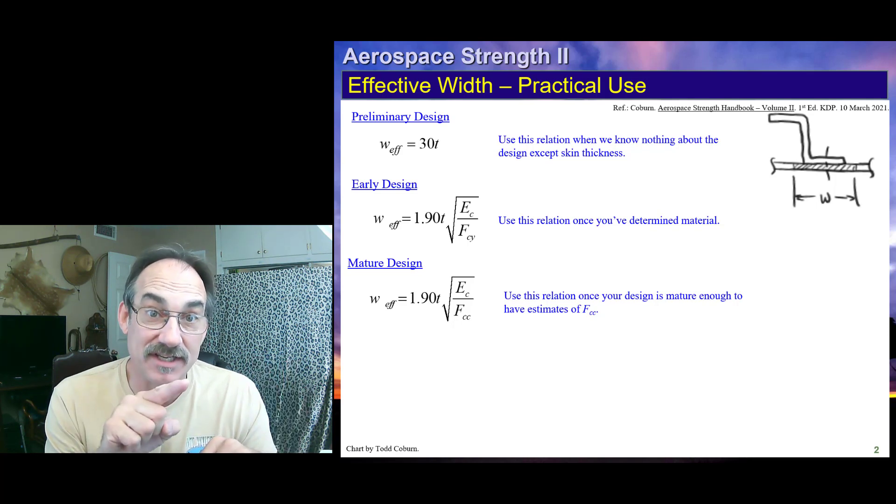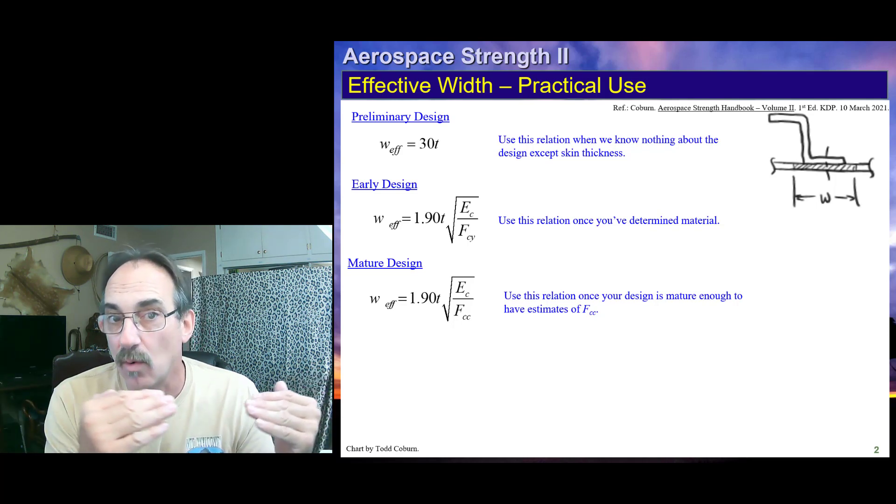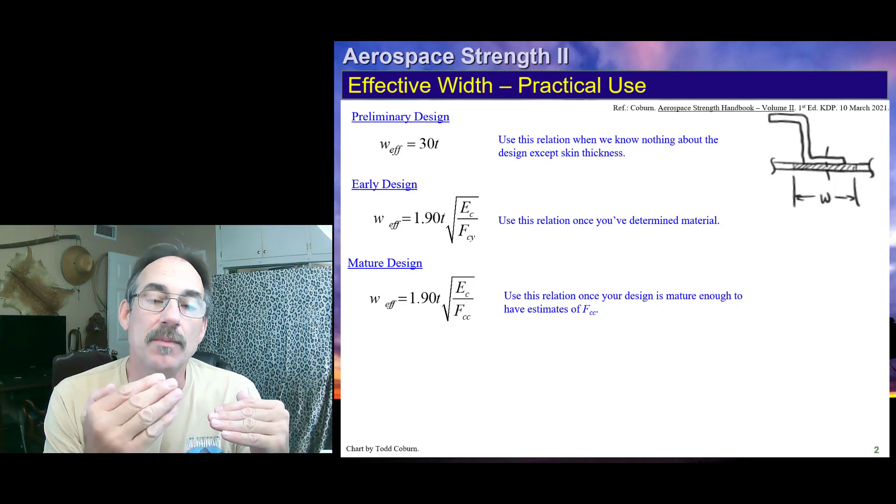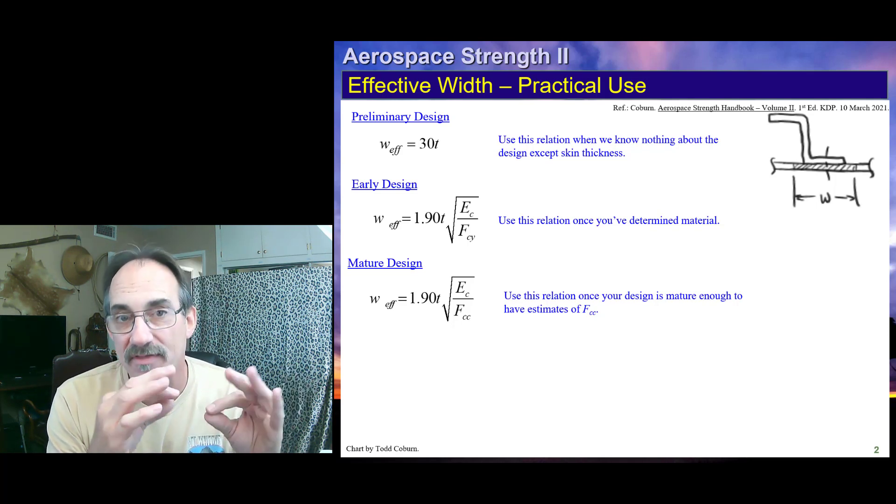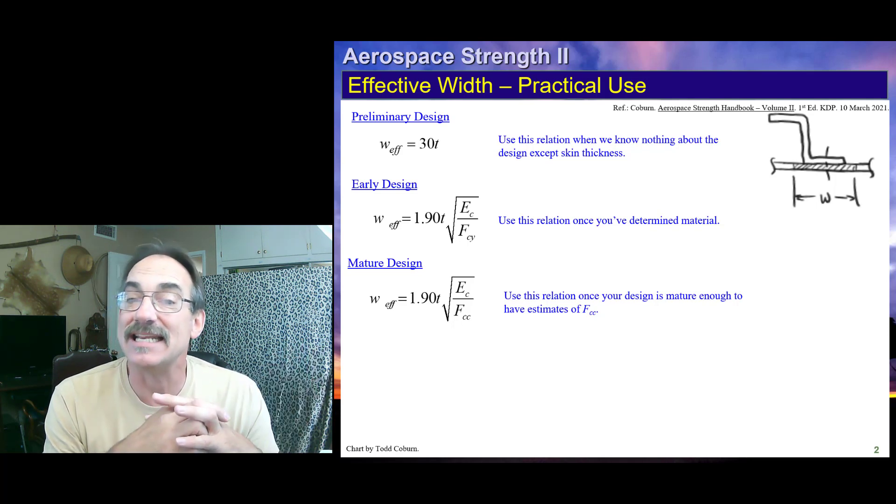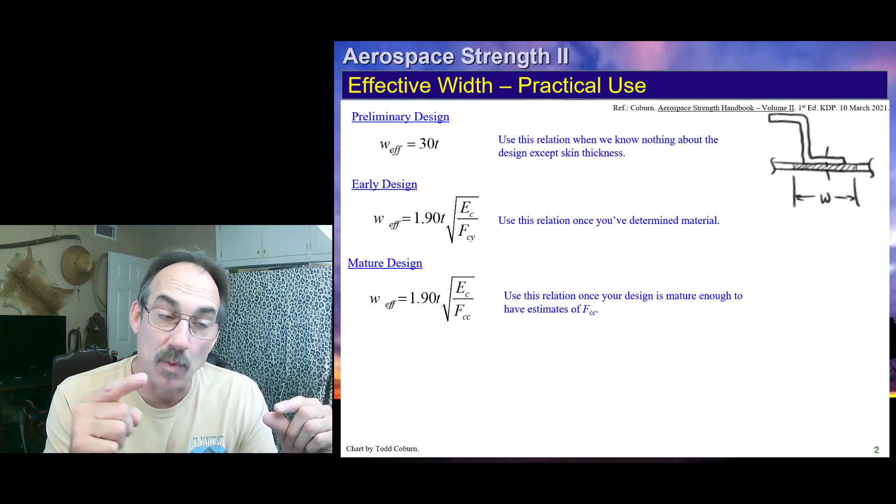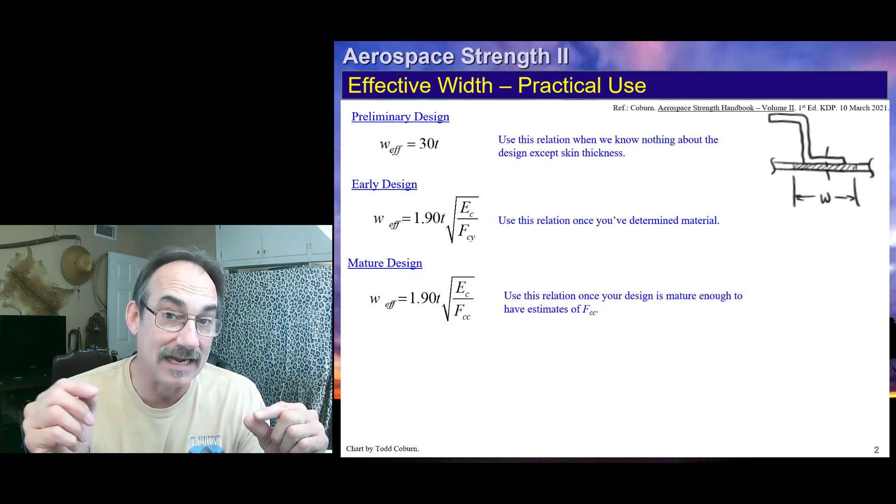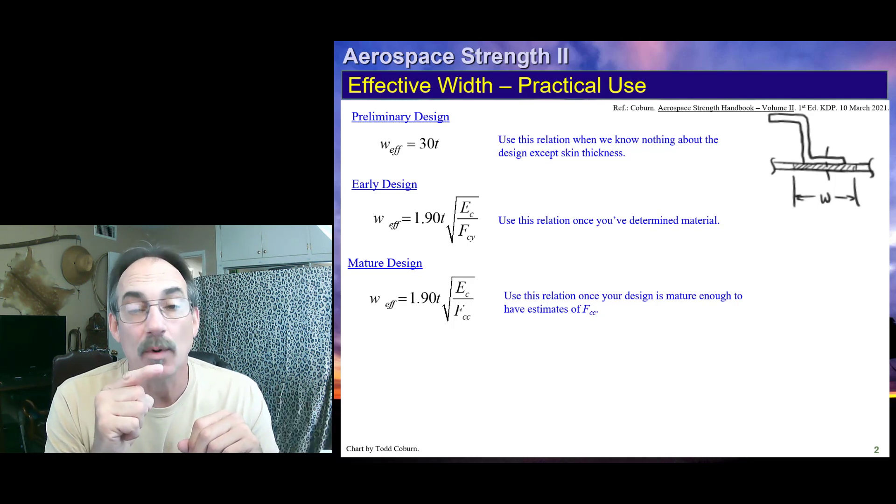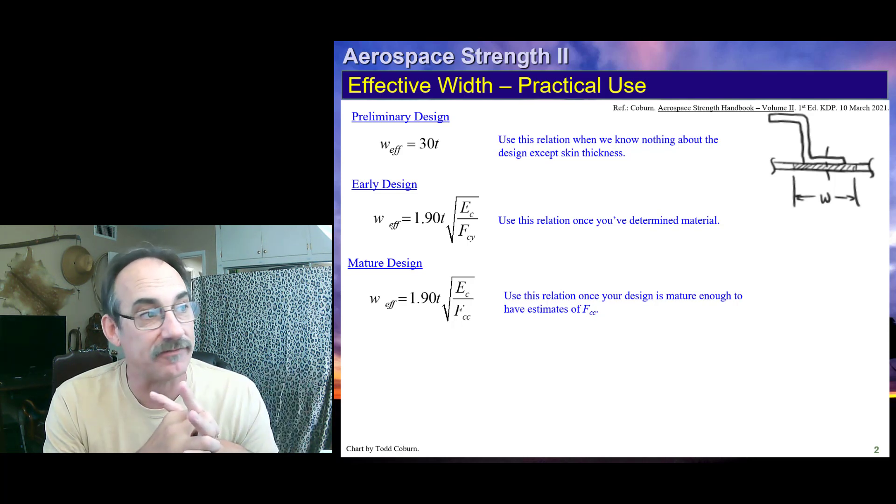We have a stringer. This is a Z stringer. We have thin skin attached to it with a rivet or a fastener. And we can assume 30T of skin works with the stringer. Now, if we had a pair of thin stringers attached together, you could go and assume that some effective width of a flange works with it. And in that case, you'd be working with the thickness of that flange that you're trying to add in. That T that we're using is the thickness of the member we're trying to figure out whether it works with this stiffener.